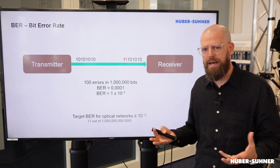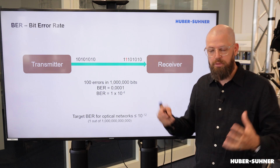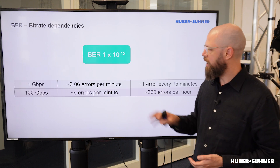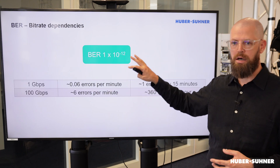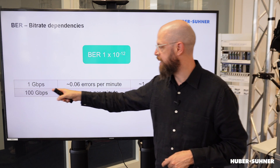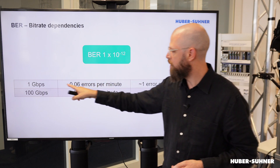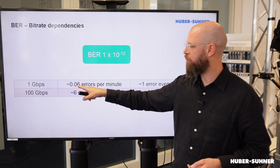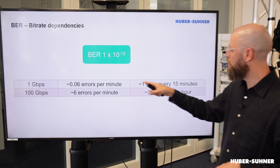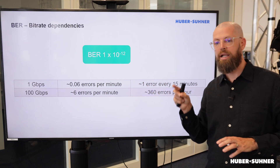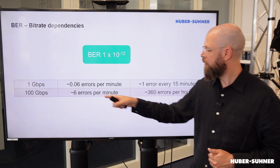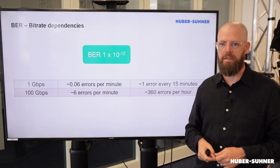Now since we're talking about the number or sequence of bits, the bit rate also has an impact. Sticking to that bit error rate of 10 to the negative 12: if we're measuring a 1 gigabit signal with this bit error rate, we're measuring 0.06 errors per minute, or put differently, roughly one error every 15 minutes. Whereas for a 100 gigabit signal, we are measuring 6 errors per minute.